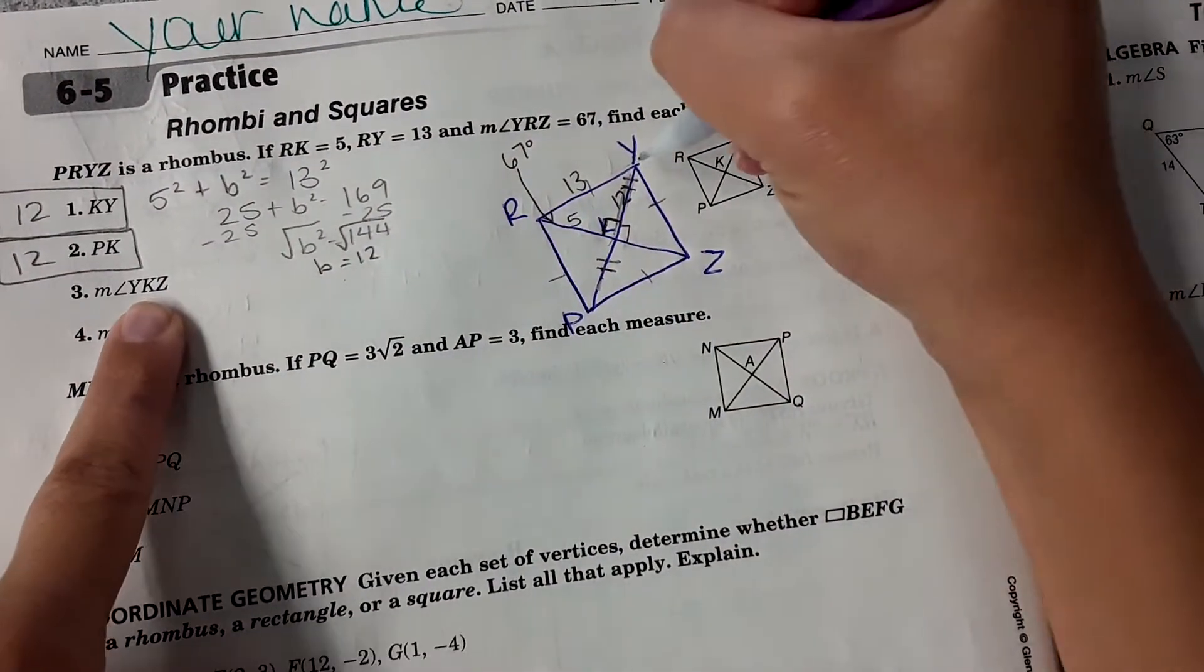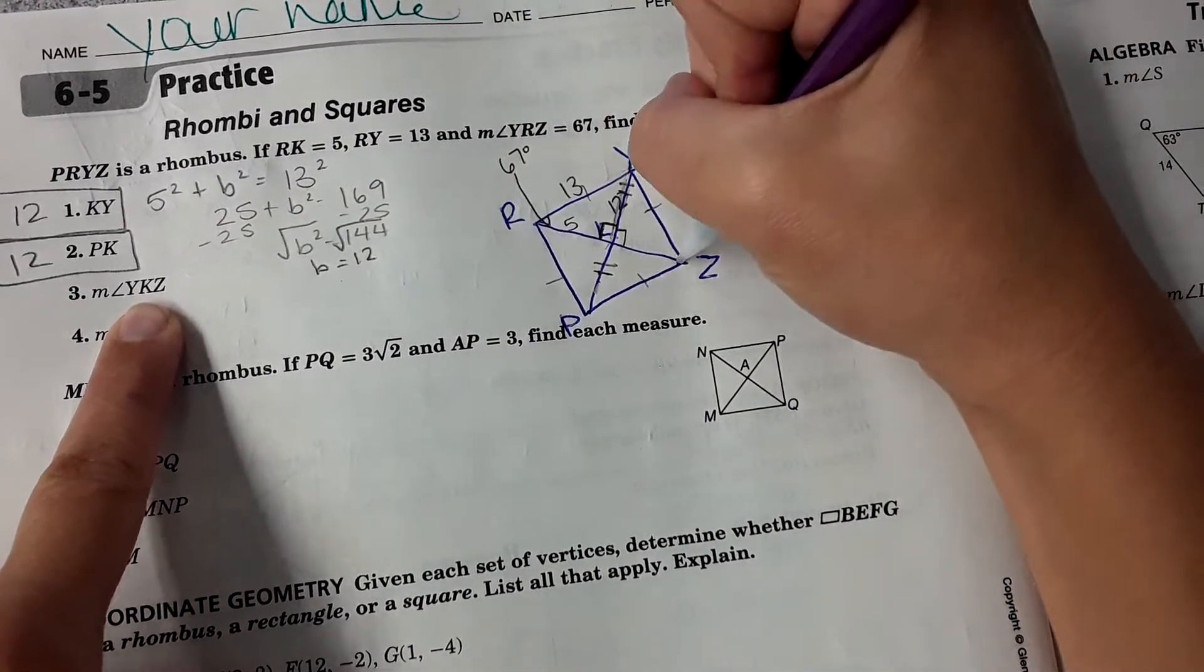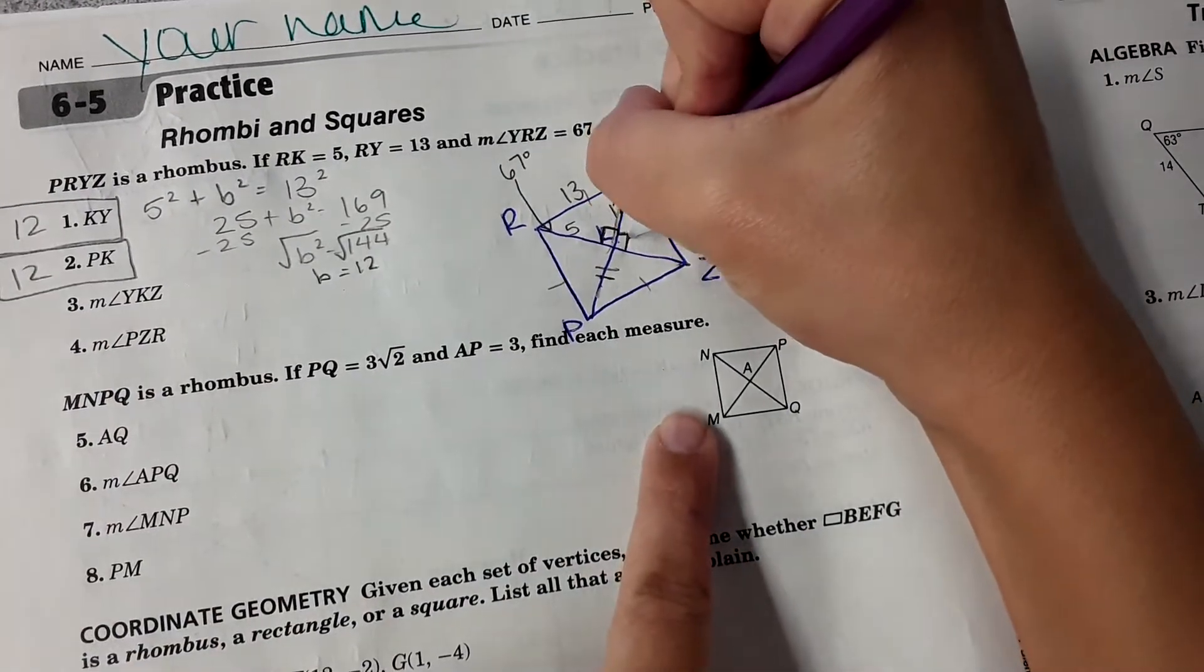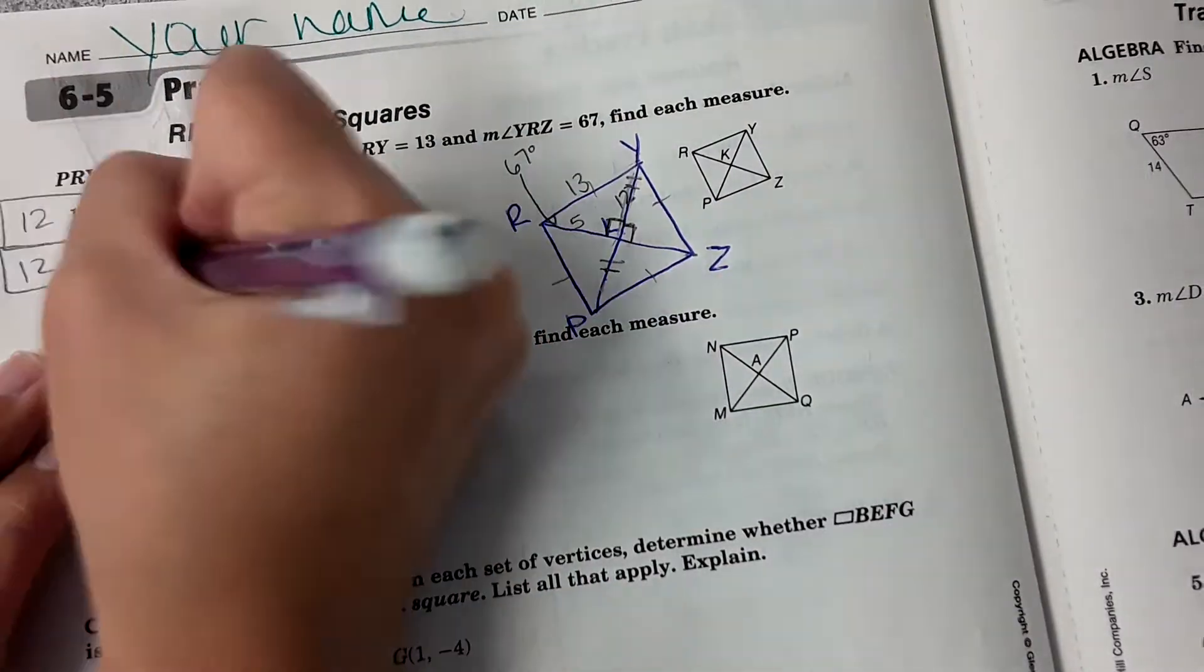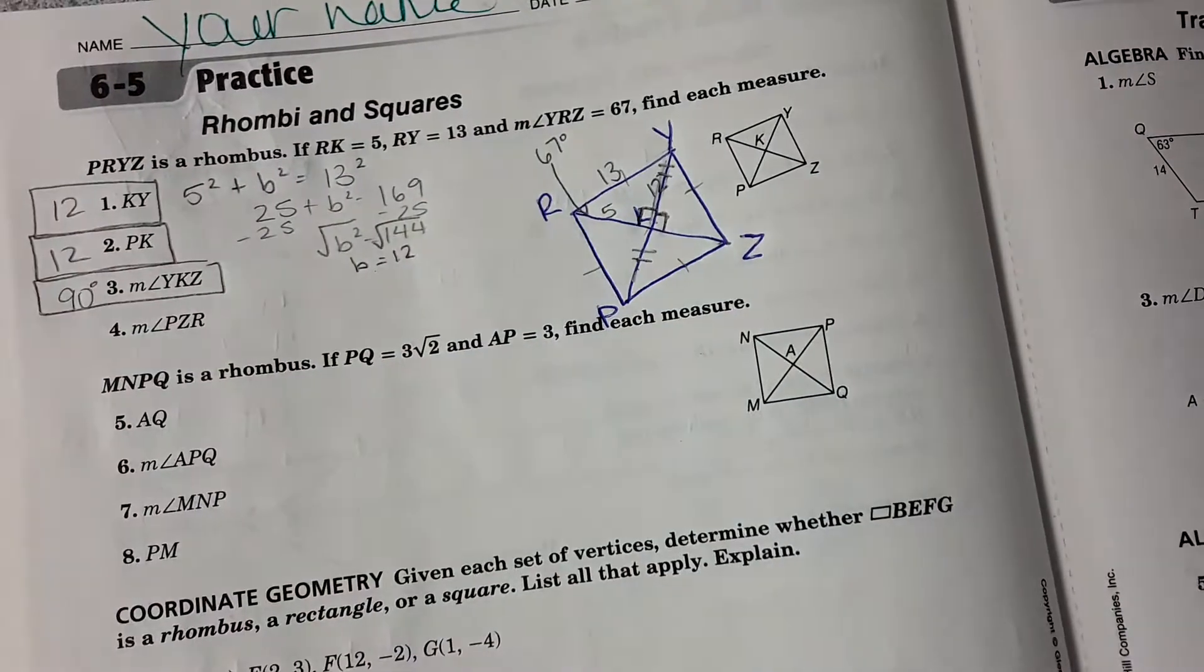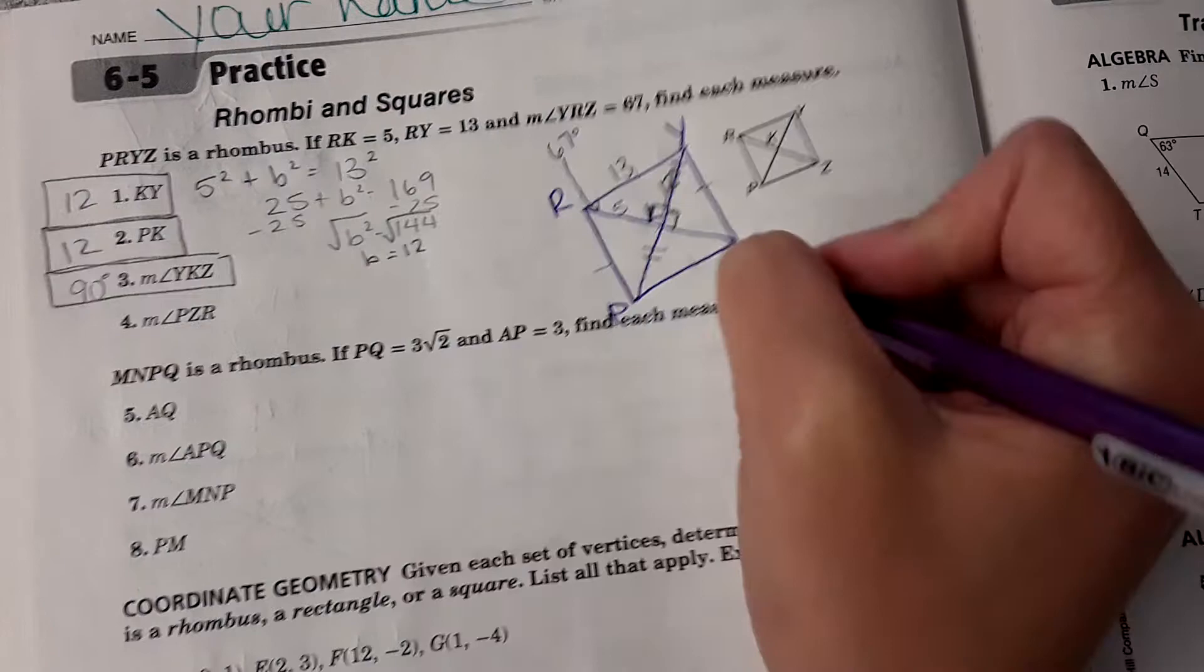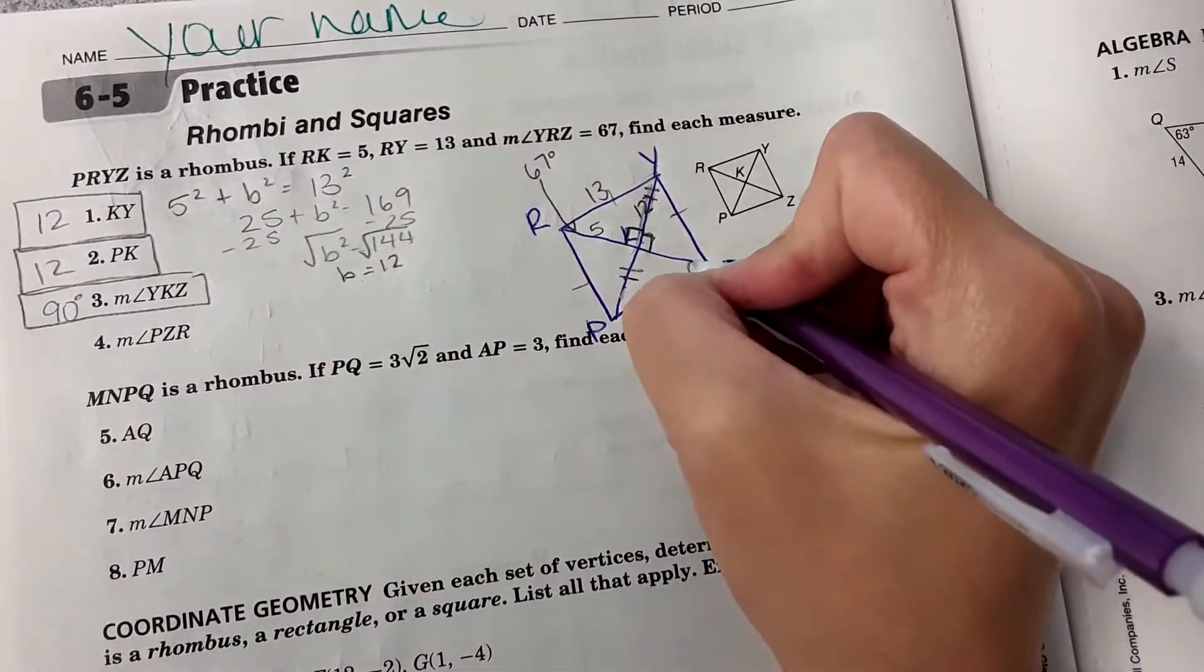Then angle YKZ. YKZ, these are perpendicular, so it would just be 90 degrees.